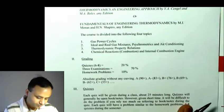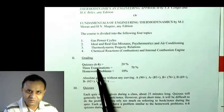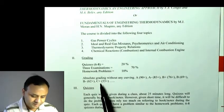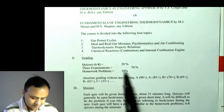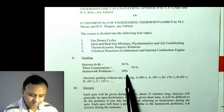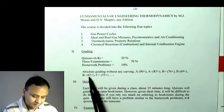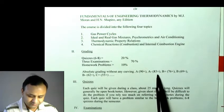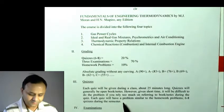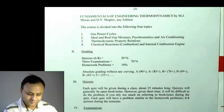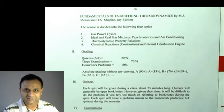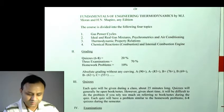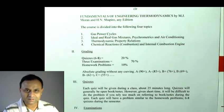Grading: there will be six to eight quizzes worth 20%, three exams worth 70%, and homework worth 10%. There is absolute grading without any curve. The scale: A is 90+, A− is 83+. Traditionally, the class average has been around B+. If on some tests the class average is poor, bonus points will be given so the average is at least greater than B.